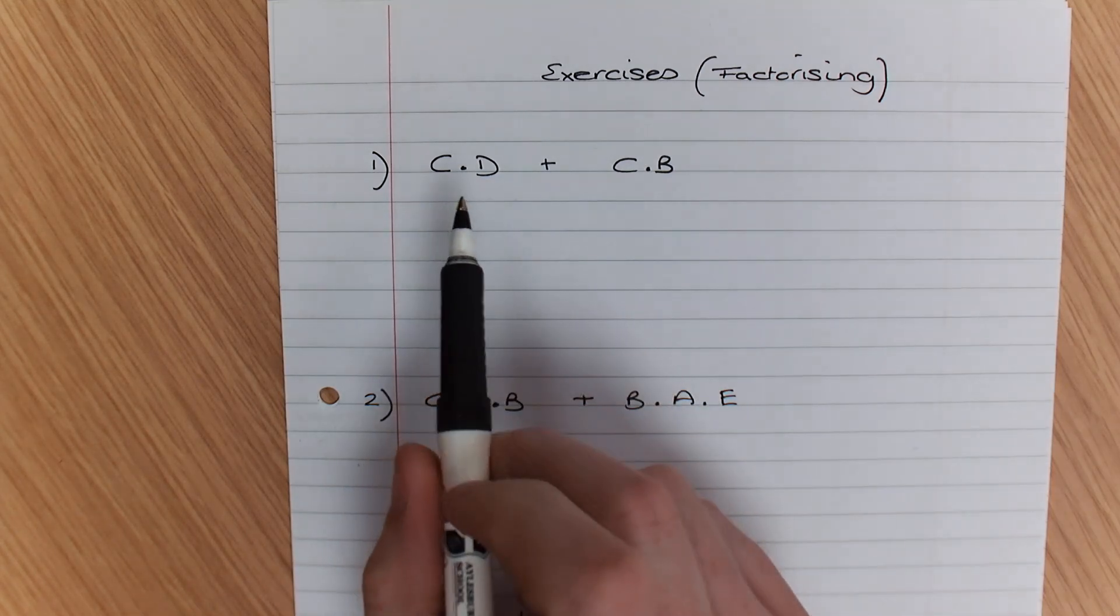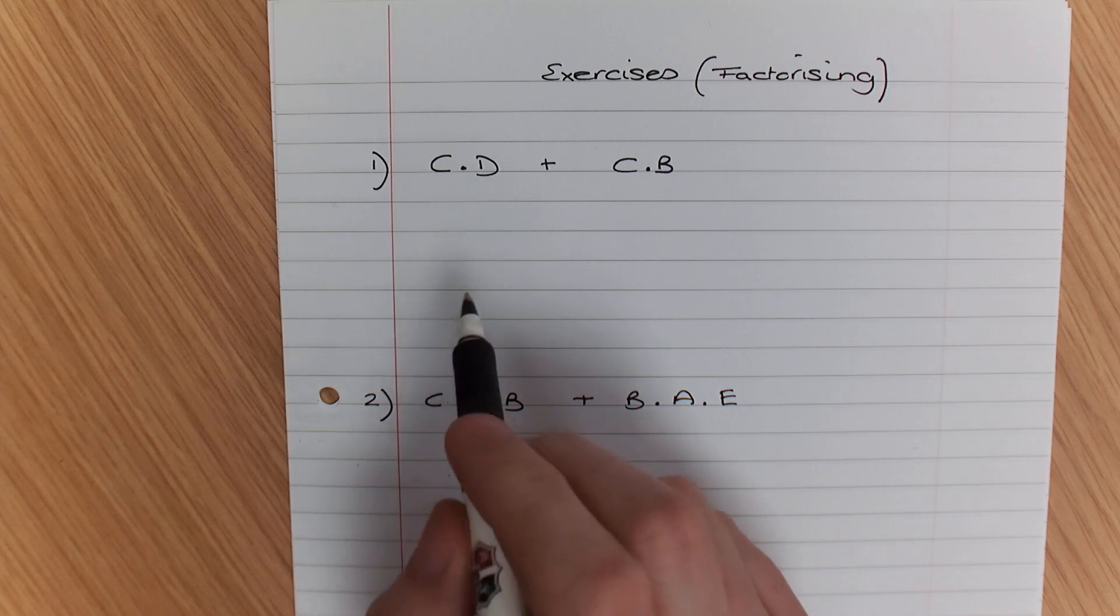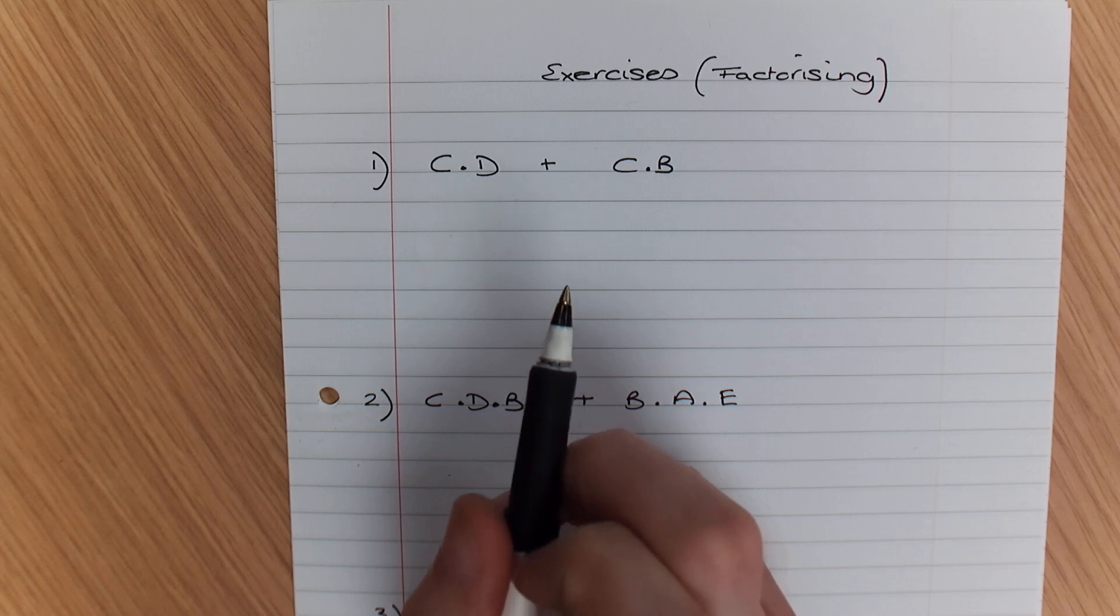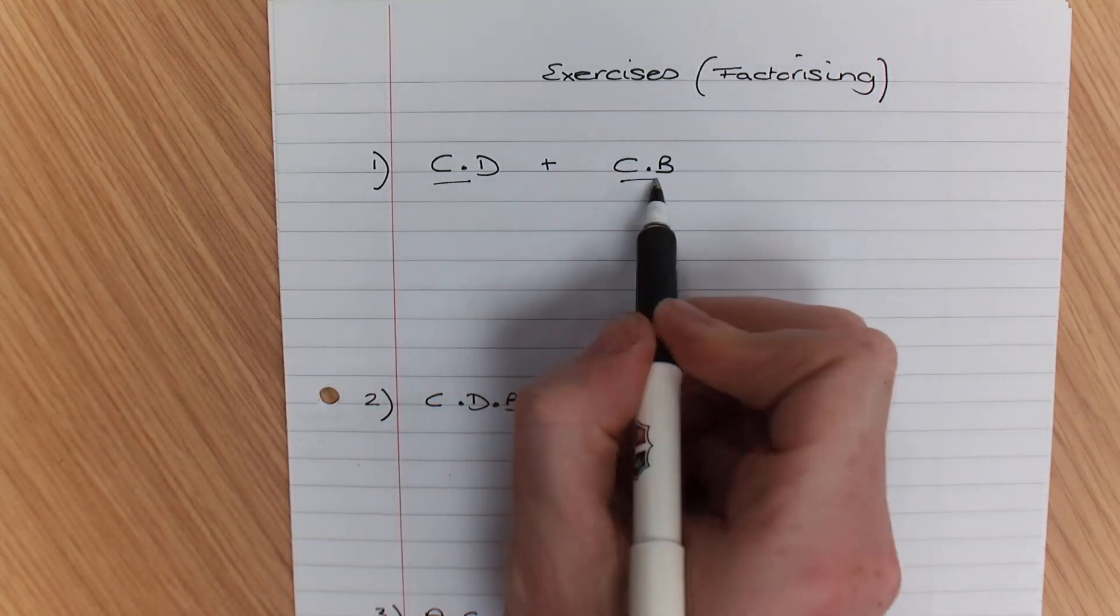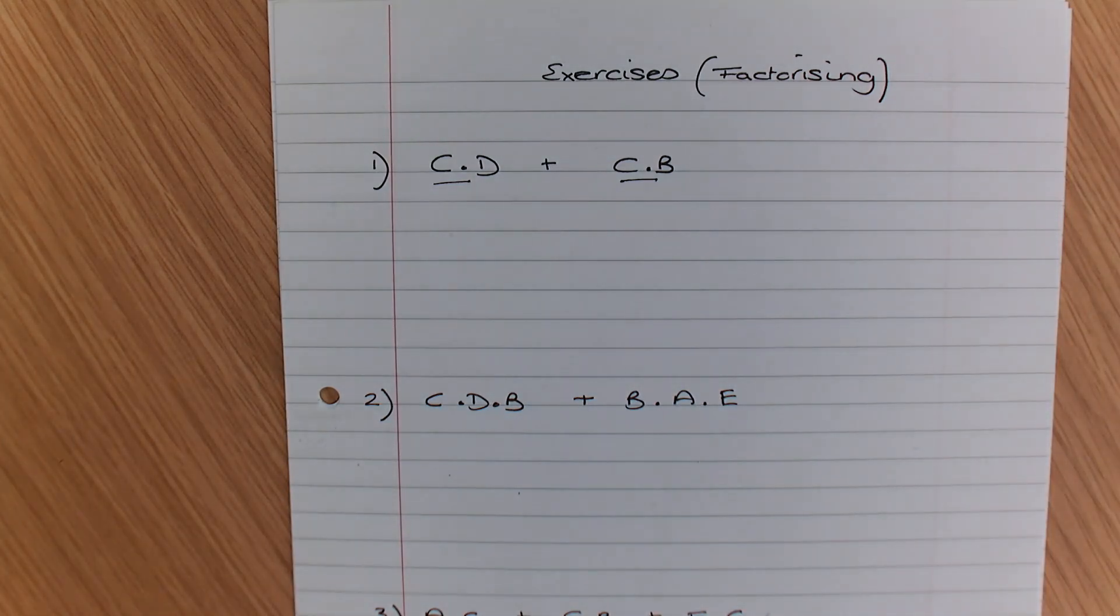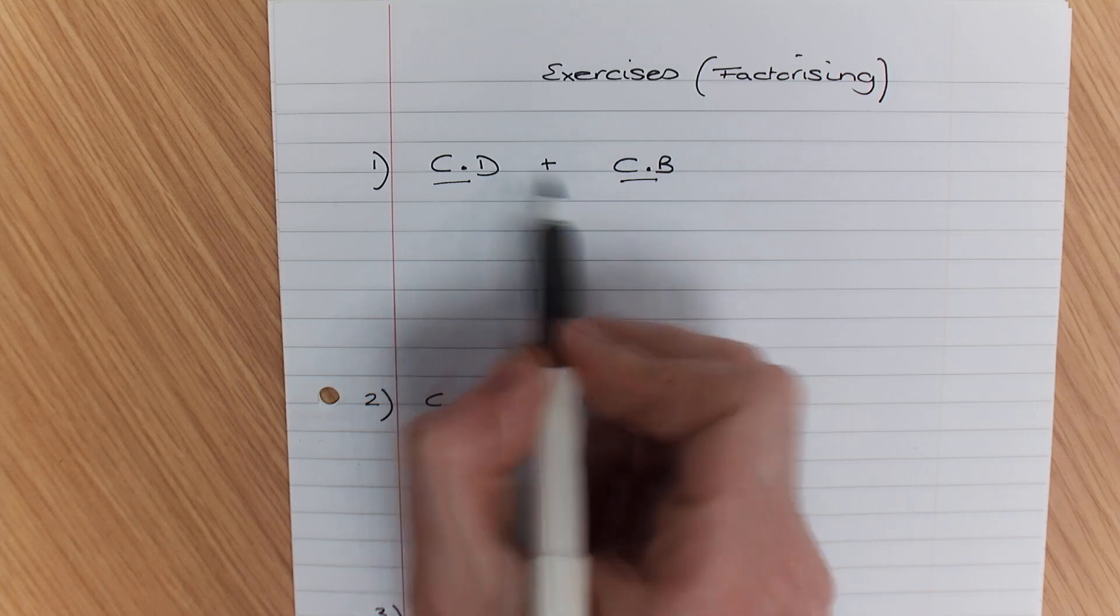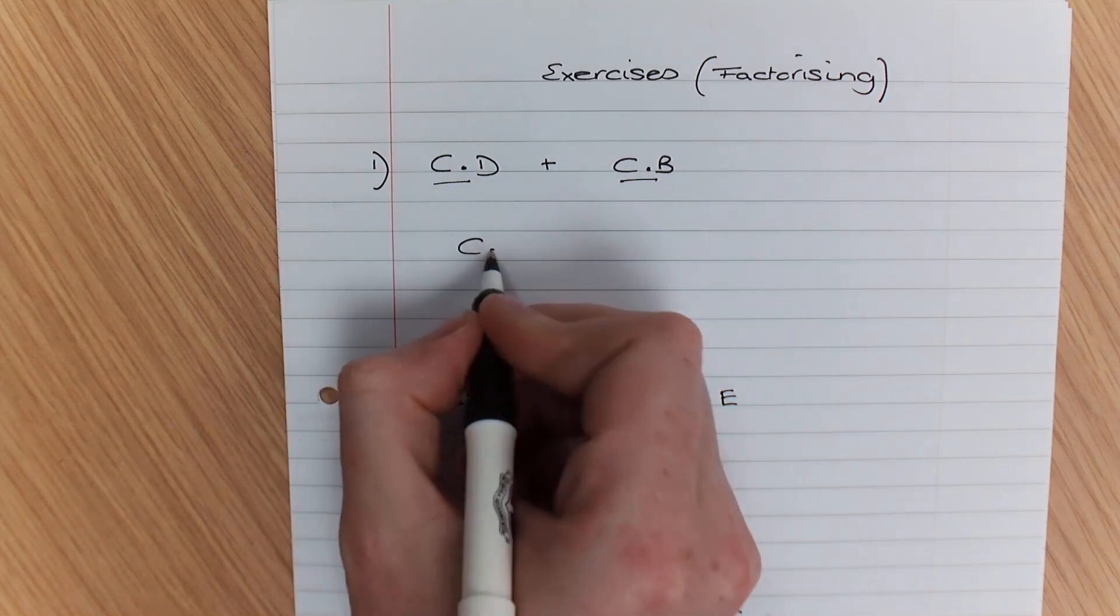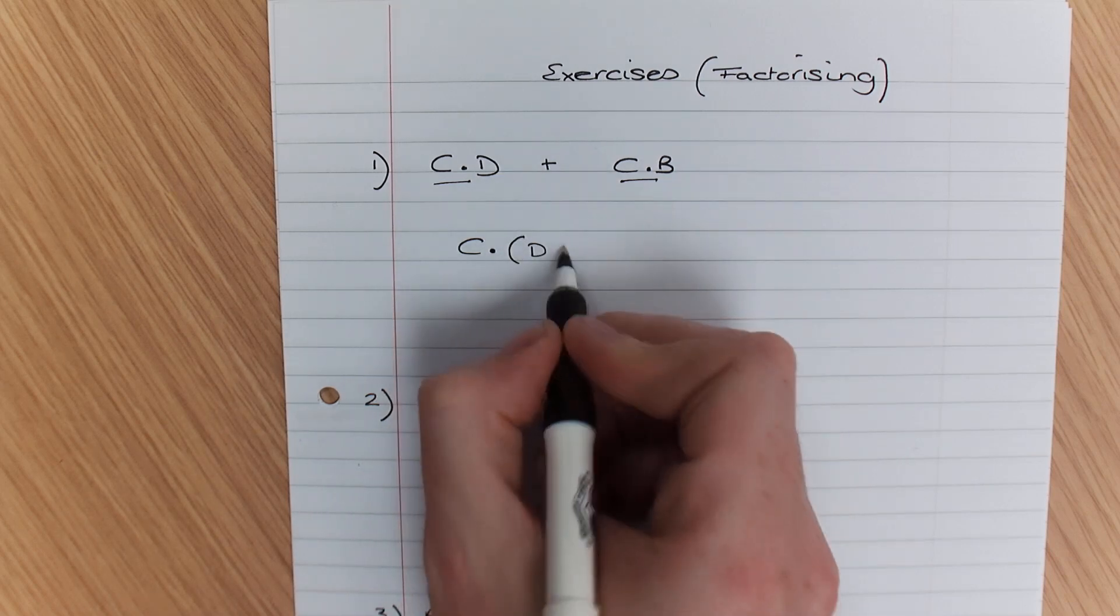Remember the general rule with factorizing is we look for the common factor. The common factor to all of these terms that we can put into brackets is C. So this can be combined with D and B. The result of this would be C and (D or B).